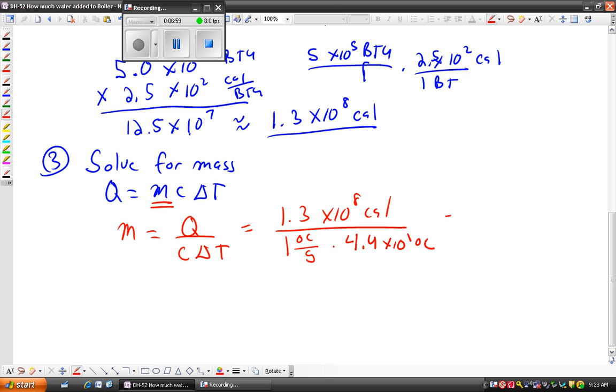And this is going to be the same as 1.3 divided by 4.4 times—now remember when you divide powers of 10, 10 to the plus 8 divided by 10 to the plus 1 is the same as 10 to the 8 minus 1, which is 10 to the 7. That's going to be in grams.